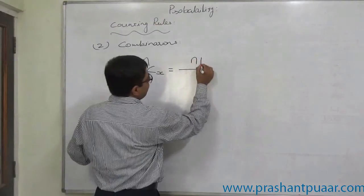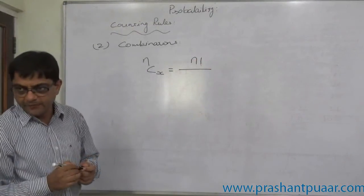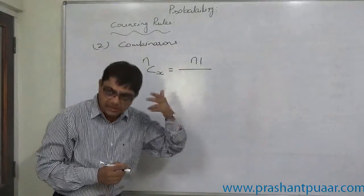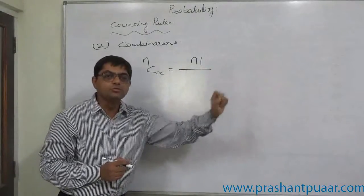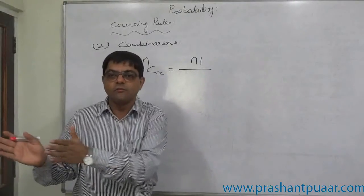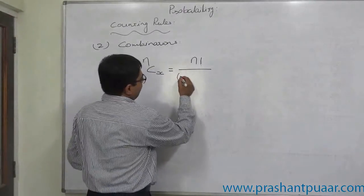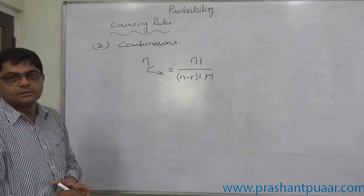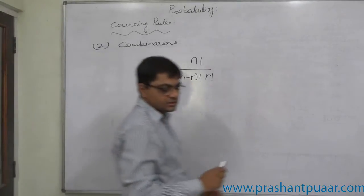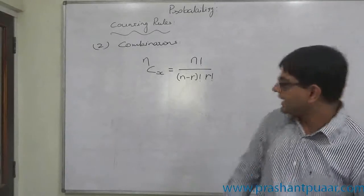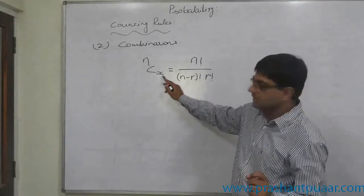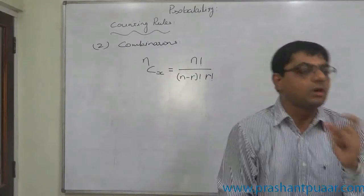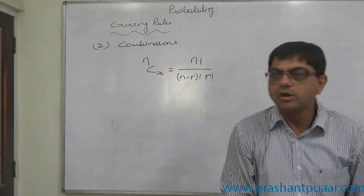What is the formula to calculate nCx? It is n factorial divided by the quantity (n minus x) factorial times x factorial. Factorial means multiplication from n down to 1: n × (n−1) × (n−2) × (n−3) × ... × 2 × 1. The rule of combinations is useful in cases where x items or outcomes are selected out of a total collection of n where the order is not important.